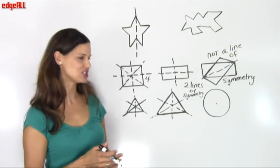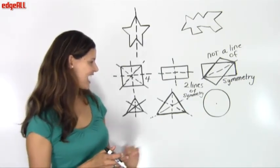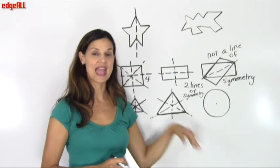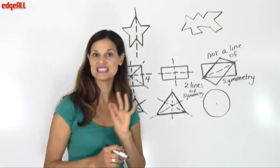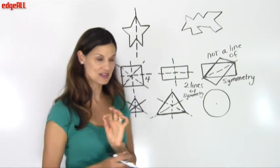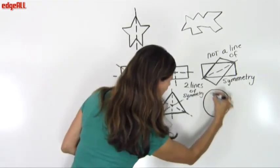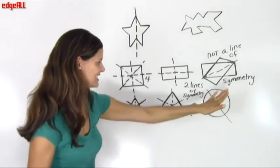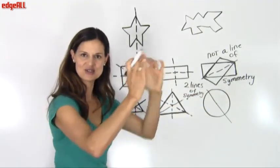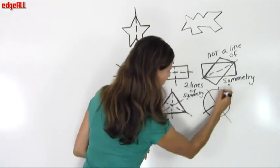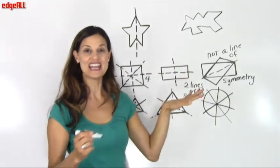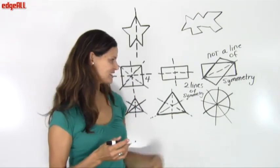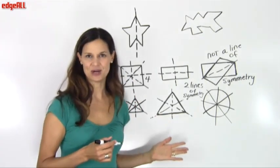The last shape we're going to look at is the circle. A circle has an infinite number of lines of symmetry — any line that passes through the center of a circle will be a line of symmetry. So if I take a line going through the middle of my circle, the reflection on either side of the line is the same. I could fold my paper in half and have those two sides matching up. I could do that an infinite number of times around my circle, so circles are symmetrical shapes with an infinite number of lines of symmetry.